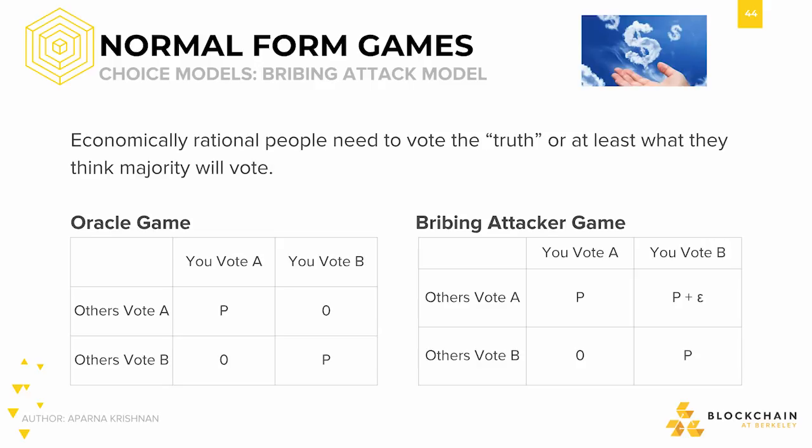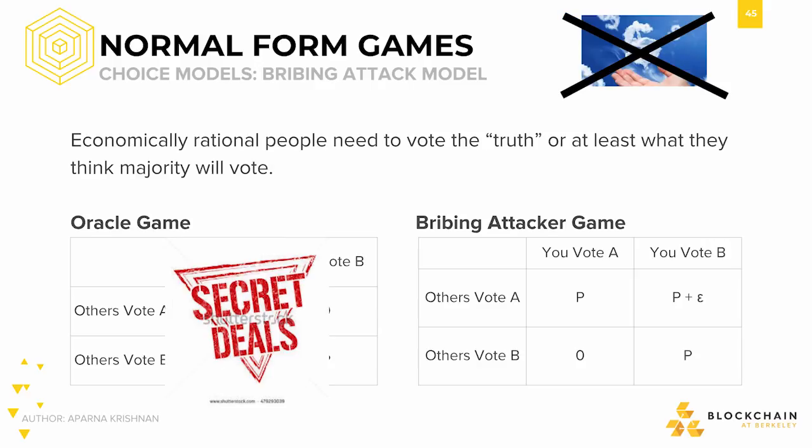Someone who wants the oracle to converge on the wrong answer can do so using the bribing attacker game. Let's say Nadir is voting and he saw the majority was going to vote for A. However, I really want him to vote for B. I can promise Nadir that I will pay him P plus epsilon if and only if Nadir votes for B but the majority votes for A. Nadir, under the belief that he is the only one who got this deal, will vote for B, thinking everyone else will vote for A. However, I meanwhile have been giving every single actor the same deal, and each person thinks like Nadir to switch their vote to B, not knowing everyone else is doing the same. In the end, everyone votes for B and I, the attacker, do not have to pay any money in bribes, since I only agreed to paying the bribe if each actor voted for B while the majority voted for A.